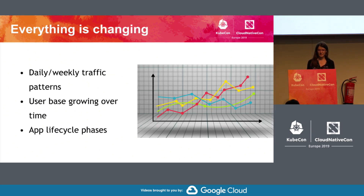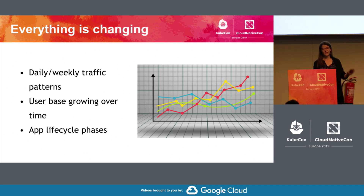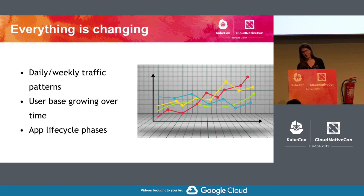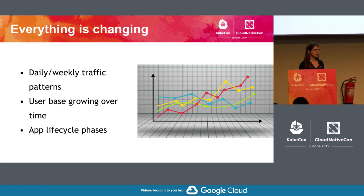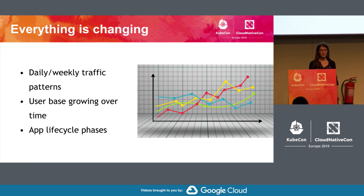The problem is that this resource demand that you specify is static. You specify it once, and it's there for the whole workload's timeline. This doesn't really match real life well. Everything keeps changing over time, and with resources this is due to many reasons. Your app may have some periodic ups and downs in usage that affect the resource demand, and it may get hugely popular — your user base grows over time, and so does your resource consumption.